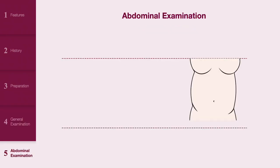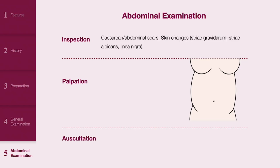Abdominal examination: the abdominal examination is divided into inspection, palpation and fetal auscultation. On inspection, look for previous caesarean scars or abdominal surgery-related scars. Skin changes relating to pregnancy you may observe include striae gravidarum, striae albicans and linea nigra.